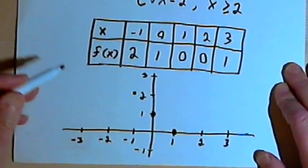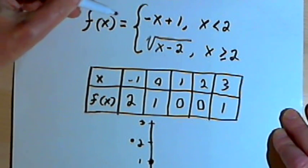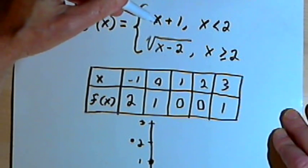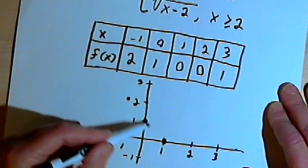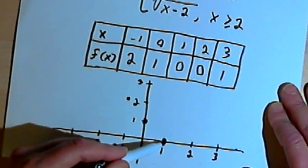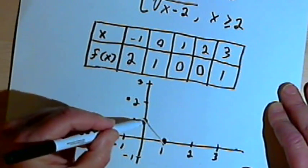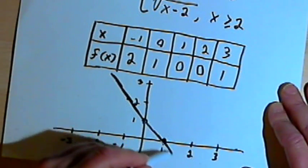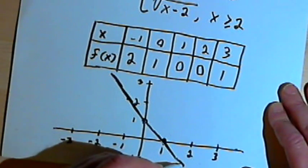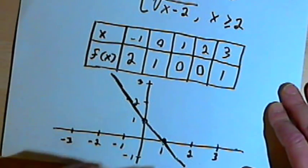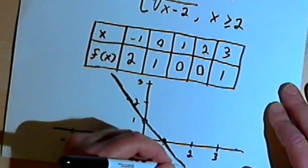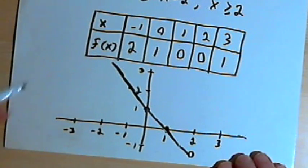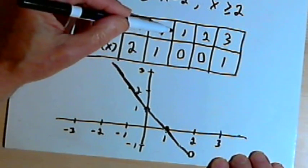These three points all came from that first part of the function, which was a linear equation, f of x equals negative x plus 1. So that means these points are going to lie in a straight line, and I can connect them and I can continue that straight line up to, going to the right, up to but not including the place where x equals 2. So I'll put an open circle at the end of that.